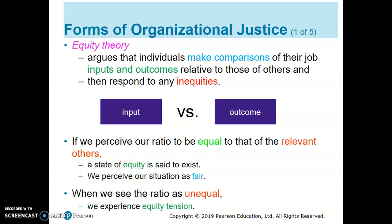Continuing with equity theory. Equity theory is where we make comparisons about the input and outcome of our work, normally in terms of salary, whether our performance and effort is the same as our friends or colleagues who got the same salary as us. So if we got the same salary, the effort is the same, the outcome is the same, we can say that it's equal — that means it is fair.